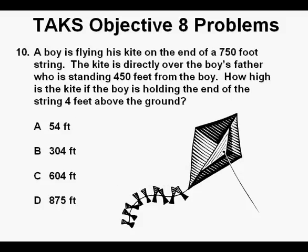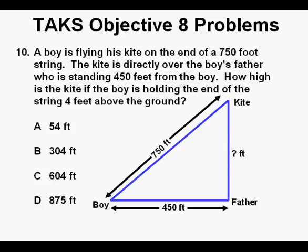Problem 10. A boy is flying his kite on the end of a 750 foot string. The kite is directly over the boy's father who is standing 450 feet from the boy. How high is the kite if the boy is holding the end of the string 4 feet above the ground? Since this problem has no diagram or sketch, it's a good idea to make a drawing. The drawing need not be exact, but reasonable enough to give us some kind of physical picture of what's going on so we can understand the situation a lot better. We also have to remember that whatever height we calculate, we'll have to add 4 feet to the calculation to get the elevation of the kite above the ground.